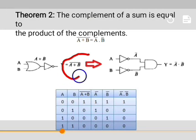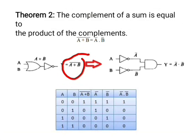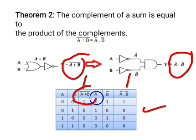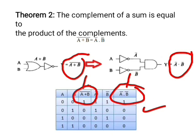A plus B whole complement is equal to A complement into B complement. By using the two tables, the third column and the fourth column are equal, confirming that A plus B whole complement equals A complement into B complement.